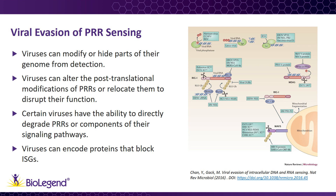Another method that viruses utilize is the post-translational modification of PRRs to inhibit their function. For example, ubiquitination of RLRs is needed for their proper activation, so several viruses, including influenza A and the original SARS coronavirus, encode proteins that block this process from happening. Instead of indirectly blocking the activation of PRRs, some viruses have methods to directly destroy these sensors. Poliovirus encodes a protease that cleaves the RIG-I-like receptor MDA5, while hepatitis A and C viruses carry proteases to degrade MAVS, the adapter protein needed for RLR signaling.